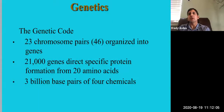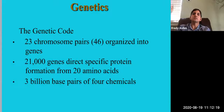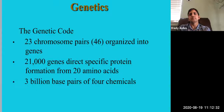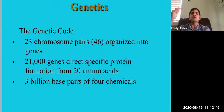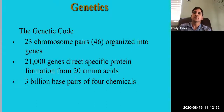Every normal human has 23 pairs of chromosomes — 46 total. There are about 21,000 genes that direct the synthesis of specific proteins to form the 20 amino acids. There are also approximately 3 billion base pairs of chemicals. Think of DNA as a twisted ladder — there are about 3 billion steps on that ladder. That's a lot of genetic information for a normal human being.